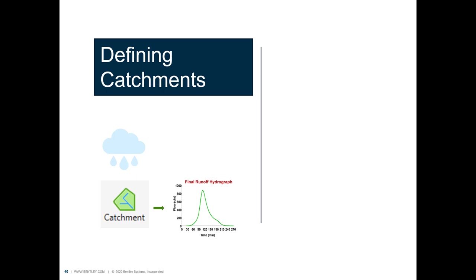Anytime we talk about runoff, we talk about the catchment elements, because all the runoff calculations happen in those elements. A catchment — I'll refer to it as a basin, subcatchment, watershed, or drainage area — is simply the area of land where precipitation is received.